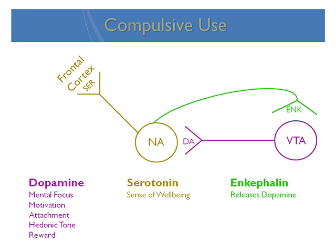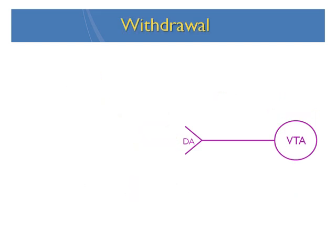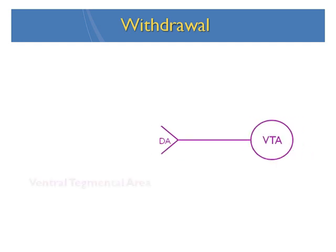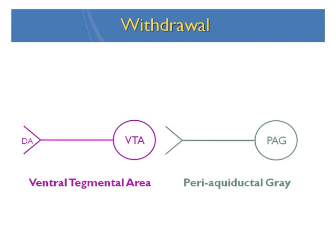So that was the compulsive use circuit — it has nothing to do with withdrawal. Now let's take a look at withdrawal, which has very little to do with addiction. We'll add a new group of cells called the periaqueductal gray. The cells of the periaqueductal gray have nothing to do with compulsive use, nothing to do with reward and feeling better, and very little to do with addiction, as we'll see. We know this because in the lab, scientists can make sure that an animal is only getting drug in the periaqueductal gray or in the ventral tegmental area.